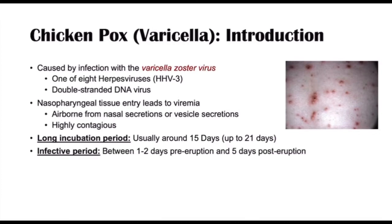The infective period — when an individual can infect other individuals — occurs between one to two days pre-eruption, so one to two days before they begin to have eruption of vesicles. And it lasts up to five days post-eruption, after they have had their last vesicle eruption. So this can last for a very long time, even after they have stopped having vesicular eruptions.